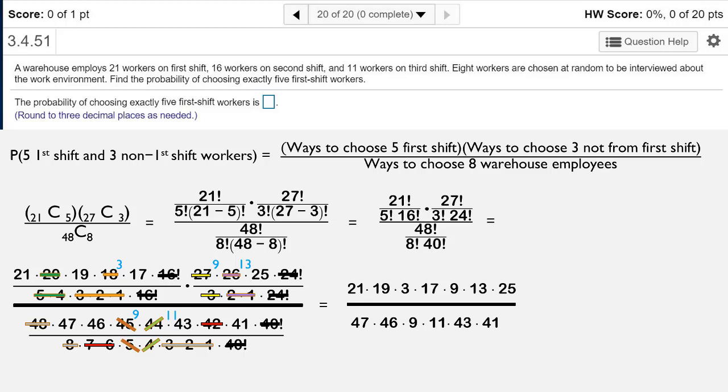When we multiply this out we end up with 59,520,825 divided by 377,348,994. As a decimal, that's 0.1577341558, and rounded to 3 decimal places is 0.158. And that's your answer.